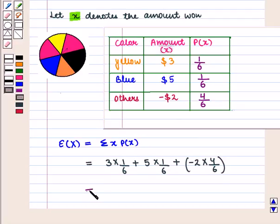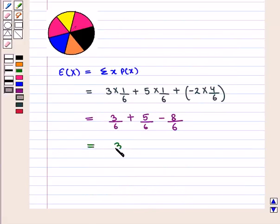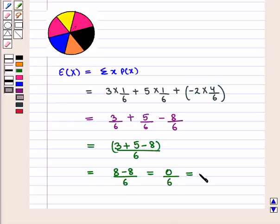And this is equal to 3 plus 5 minus 8 the whole upon 6, which is equal to 8 minus 8 whole upon 6, that is equal to 0 upon 6 which is equal to 0.